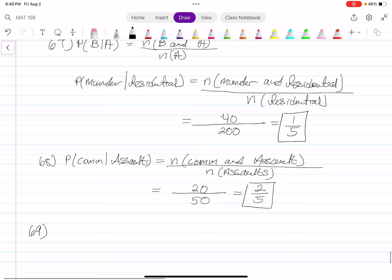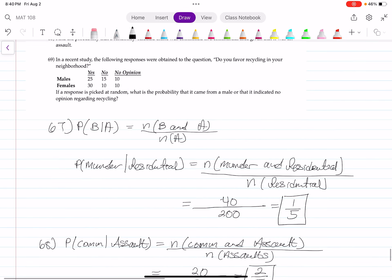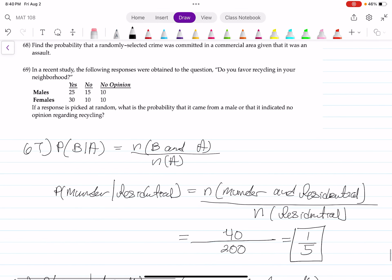Number 69. We have a different set of table. Well, a different data table. It says, in a recent study, the following responses were obtained to the question, do you favor recycling in your neighborhood? So you have males and females, you have yes, no, and no opinion.